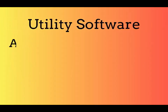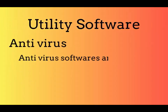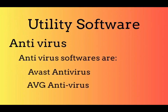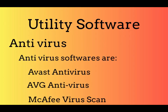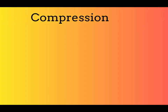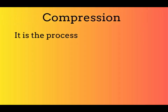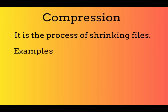Utility Software includes antivirus software such as Avast Antivirus, AVG Antivirus, and McAfee VirusScan. Compression is the process of shrinking files; examples include WinZip and WinRAR.